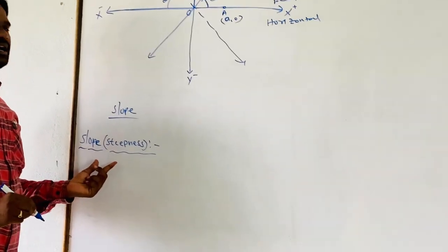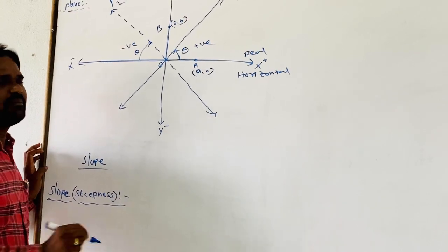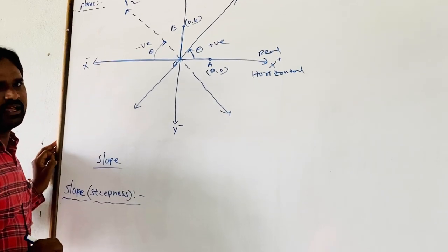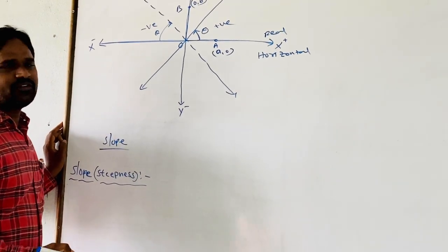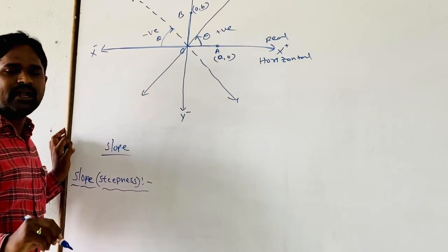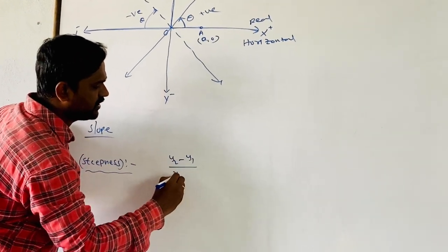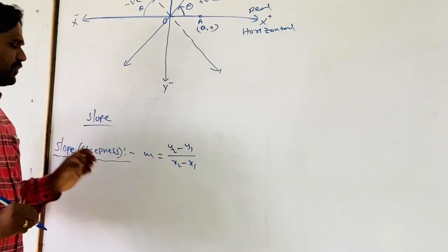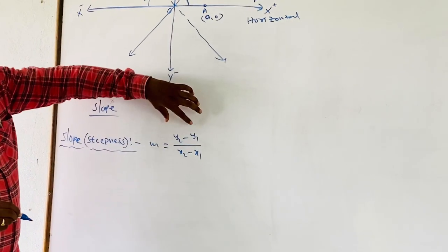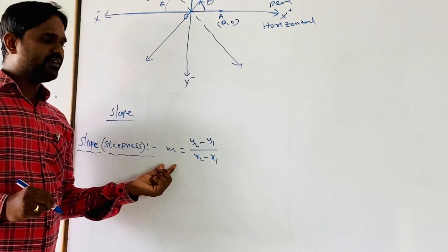Let us discuss the slope of a line. Slope means the angle a line makes with the x-axis or horizontal line. It is also defined as the rate of change of the y-coordinate with respect to the x-coordinate, given by (y2 − y1) / (x2 − x1), and is represented by m.